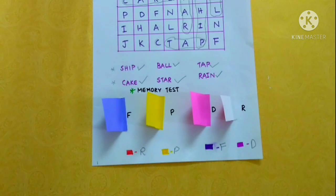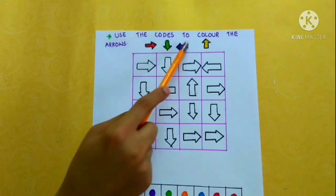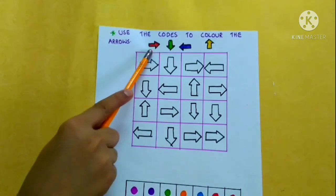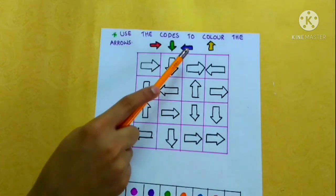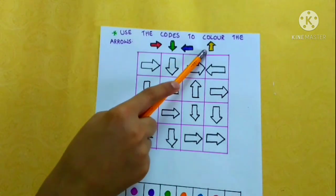To increase the difficulty level, you can add more colors or numbers. Use the codes to color the arrows. Right arrow red, down arrow green, left arrow blue, up arrow yellow.